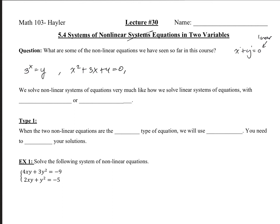What's another kind of equation we've seen? We've seen circles — x squared plus y squared equals 4. We've seen logarithmic — log base 3 of x equals 4. Those are a few of the ones we've seen. So we are now going to look at systems with these equations in them. We won't be working with logs and normally not exponential, but quadratic and circles are definitely something we might be seeing.